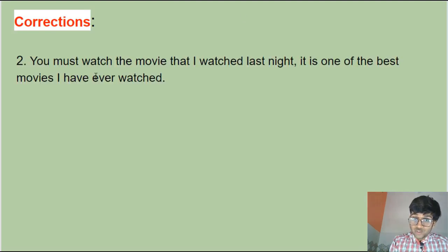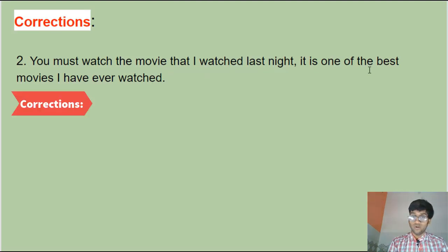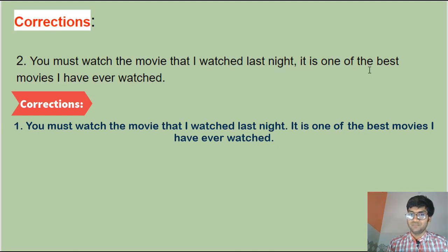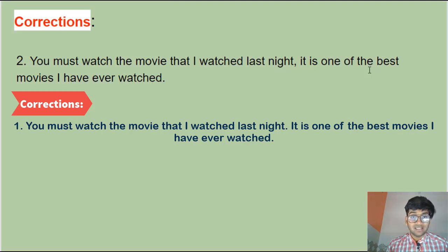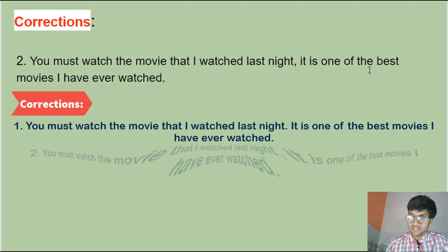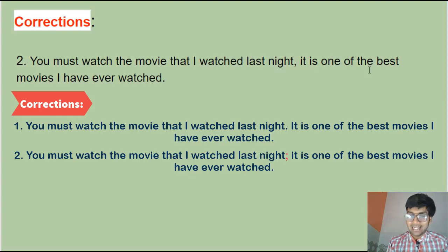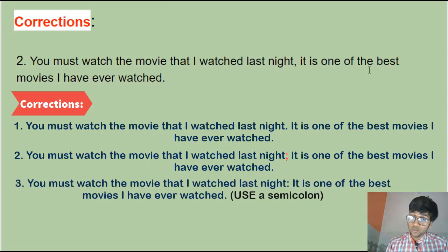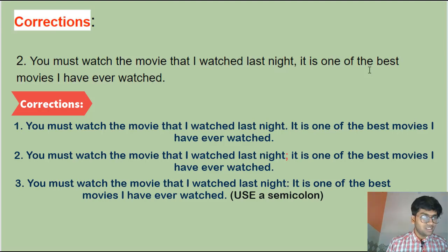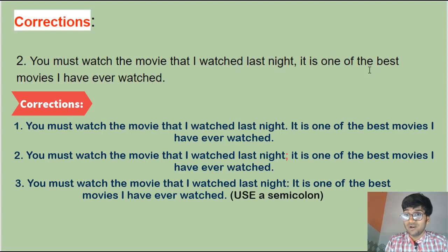Next example: 'You must watch the movie that I watched last night it is one of the best movies I have ever watched.' Method one — use a period: 'You must watch the movie that I watched last night. It is one of the best movies I have ever watched.' Method two — use a semicolon: both sentences focus on movies, so they're closely related and we can rightfully use a semicolon. Method three — a colon could be used but it wouldn't be the best choice; a semicolon is preferable here.